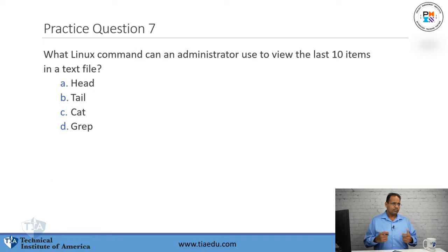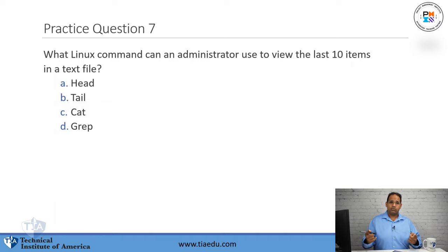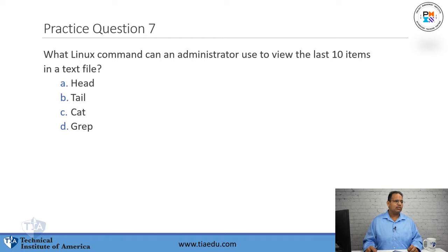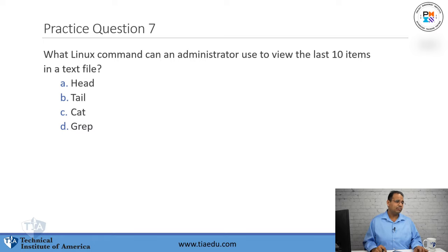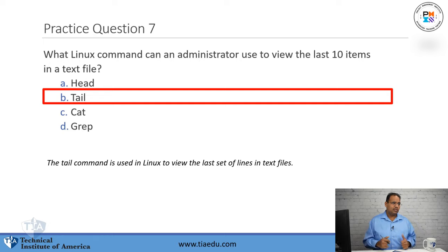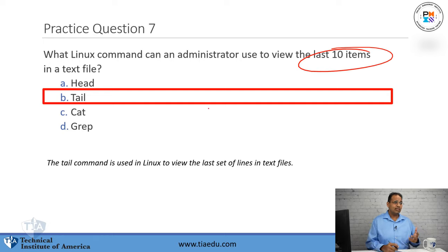Practice question number seven — a lot of Linux commands again. Make sure you do the labs in the course. What Linux command can an administrator use to view the last 10 items in a text file? A, head. B, tail. C, cat. D, grep. The answer is tail — because it says the last 10 items. If you want the beginning of the file, you would use head.